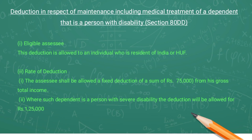The first condition is if the assessee has incurred any expenditure for the medical treatment or training of a dependent being a person with disability, or paid or deposited any amount under a scheme framed in this behalf by the Life Insurance Corporation or any other insurer or specified company for the maintenance of a dependent being a person with disability. The scheme provides for the payment of annuity or lump sum amount for the benefit of the dependent being a person with disability.